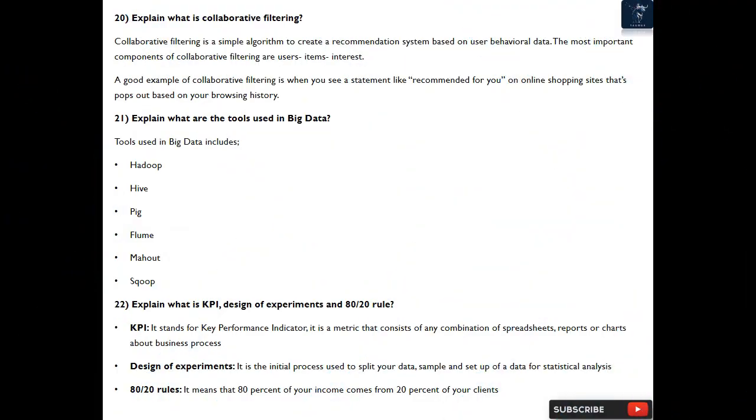Question 20: Explain what is collaborative filtering? Collaborative filtering is a simple algorithm to create a recommendation system based on user behavioral data. The most important components of collaborative filtering are users, items, and interest. A good example of collaborative filtering is when you see a statement like 'recommended for you' on online shopping sites that pops out based on your browsing history.